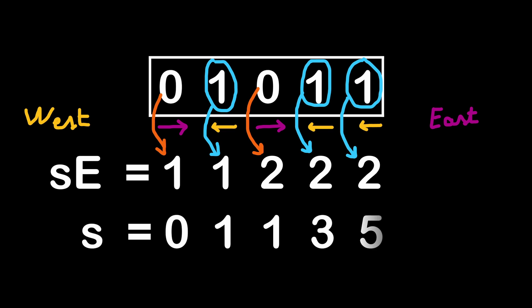I'm going to introduce another variable: the sum of pairs of crossing cars. Every time we see a car going west, we add the value of SE to our variable S, which holds the total number of crossing cars. The first car going west adds SE to S. The second car going west adds SE, which equals two, to the previous value of S giving us one plus two equals three. Then the third car going west adds SE, which is two, to S which is three, giving us three plus two equals five — the total number of crossing cars.